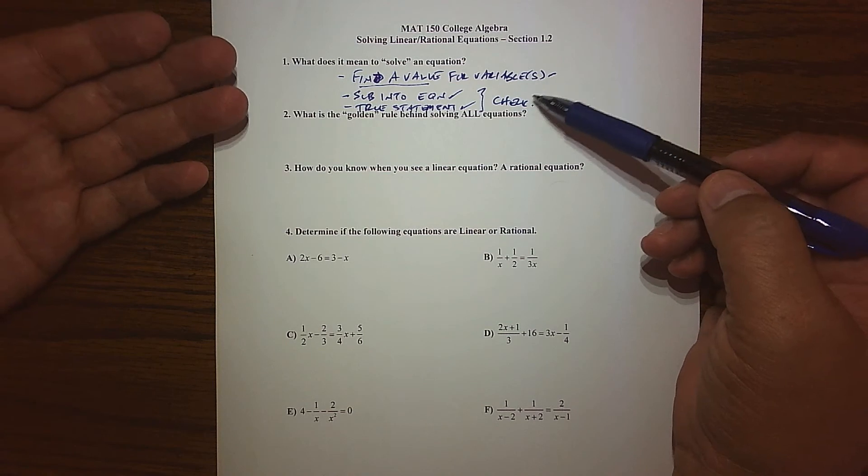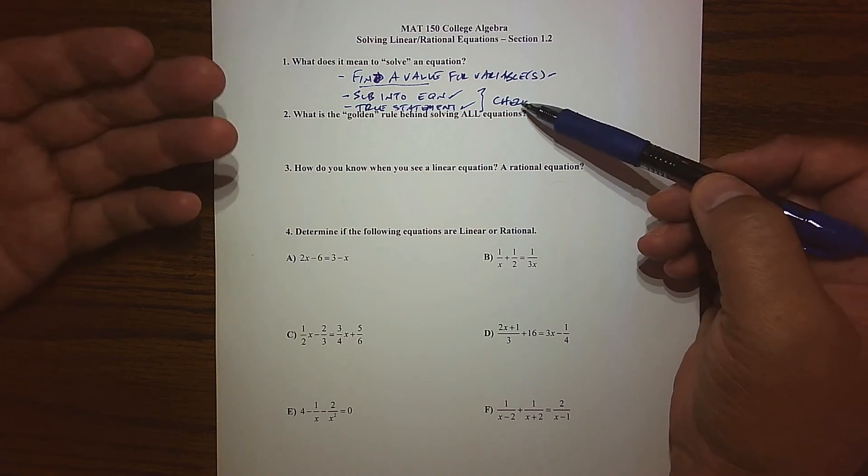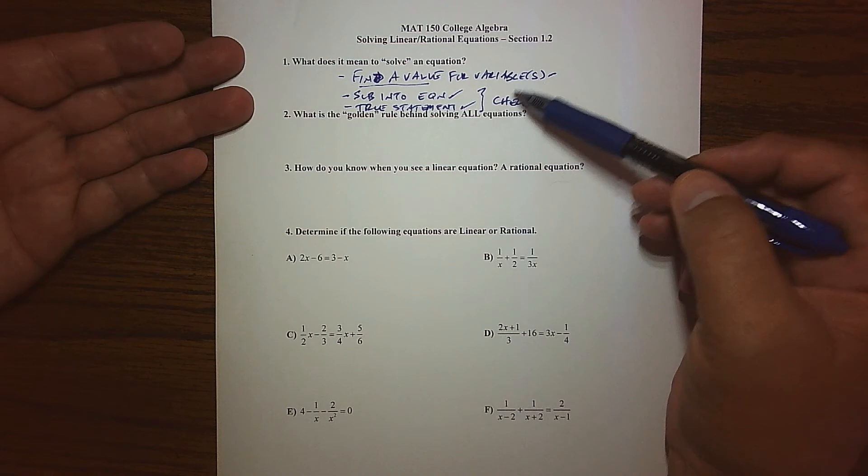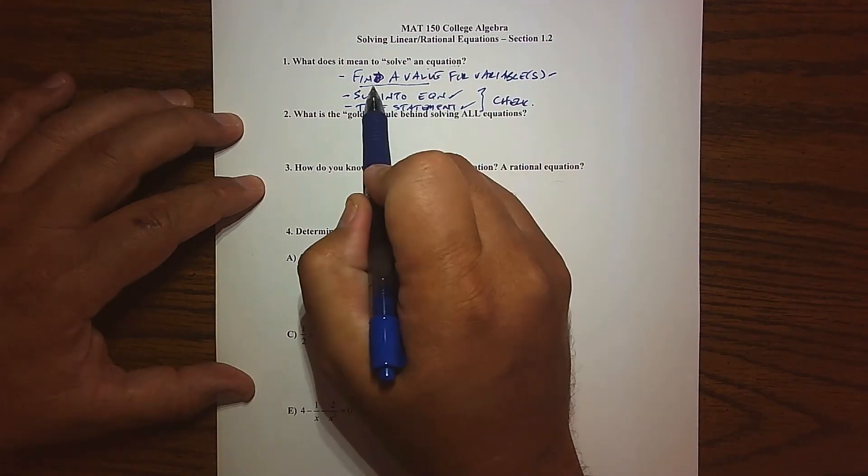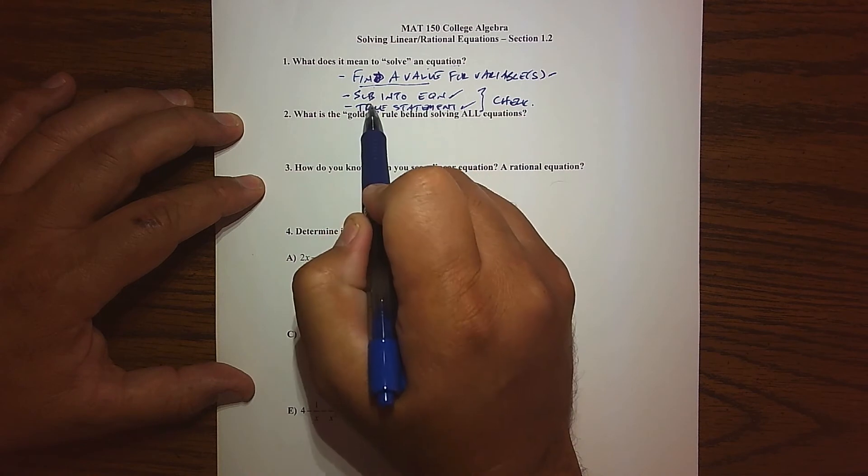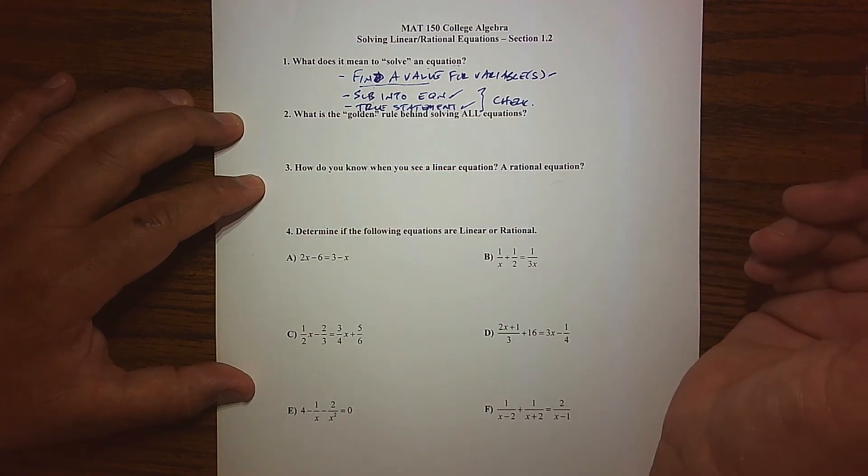And again, as I mentioned, a lot of good math, the reason a graph is the way a graph is stems from that basic characteristic, that to solve an equation, we're being asked to find a value that when I sub it in, gives us a true statement.